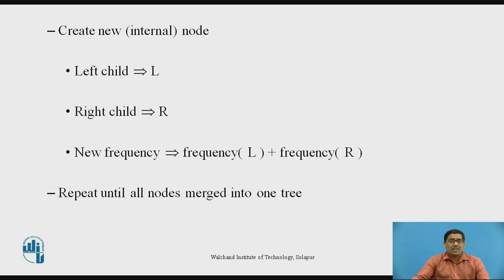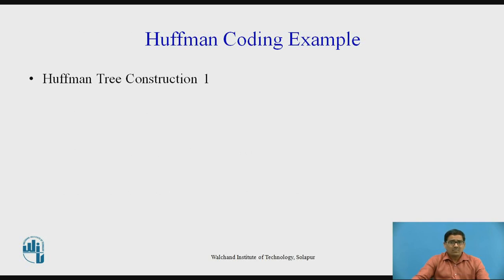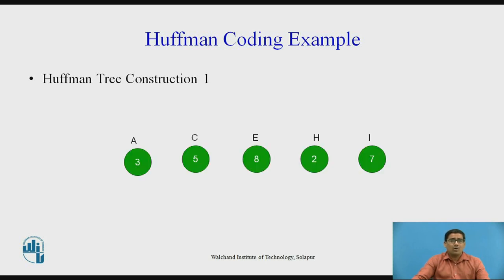Now we want to understand this algorithm with the help of an example — Huffman coding example, step one: Huffman tree construction. Here we take an example of symbols A, C, E, H, and I. The frequencies are: A has frequency 3, C has frequency 5, E has frequency 8, H has frequency 2, and I has frequency 7.